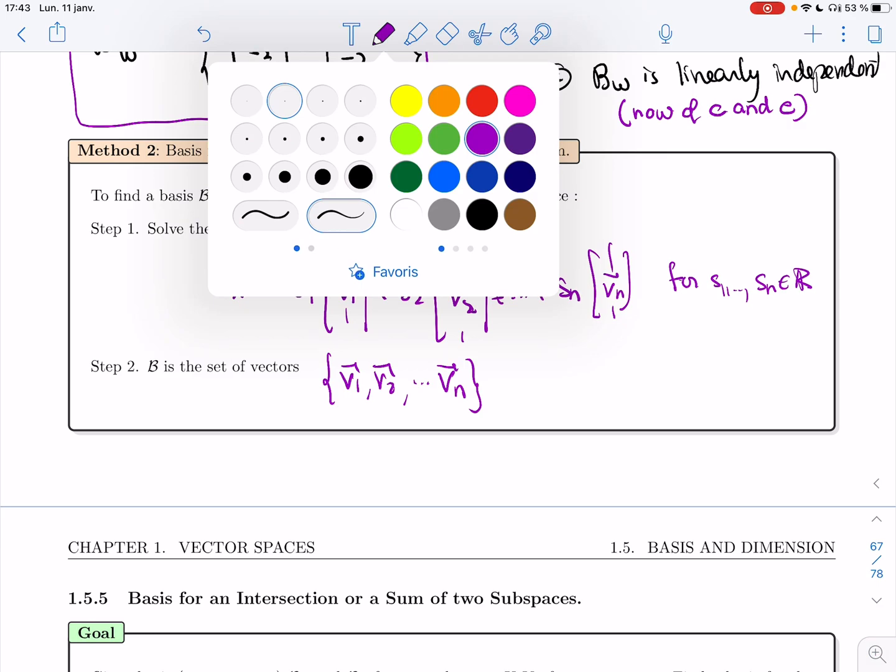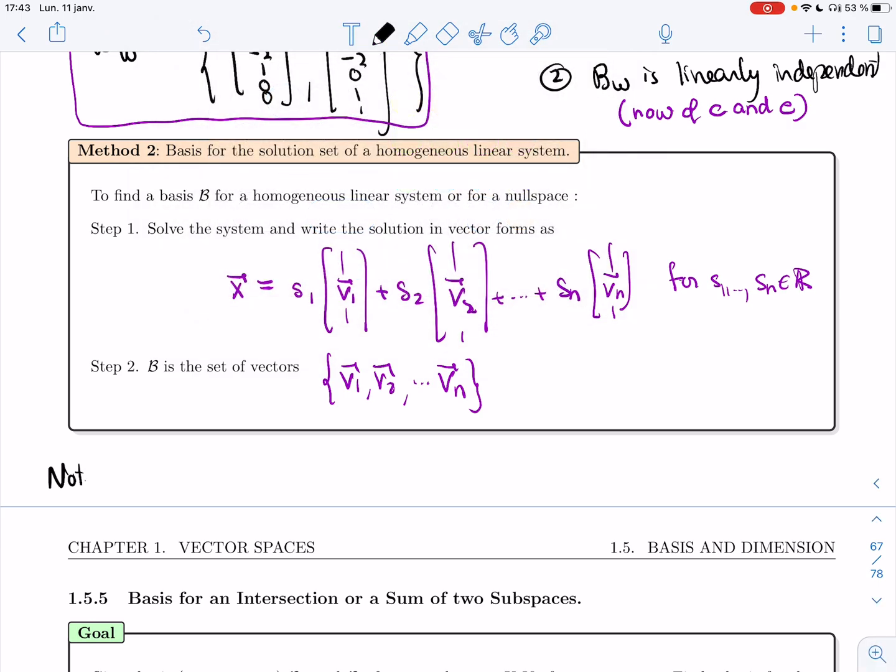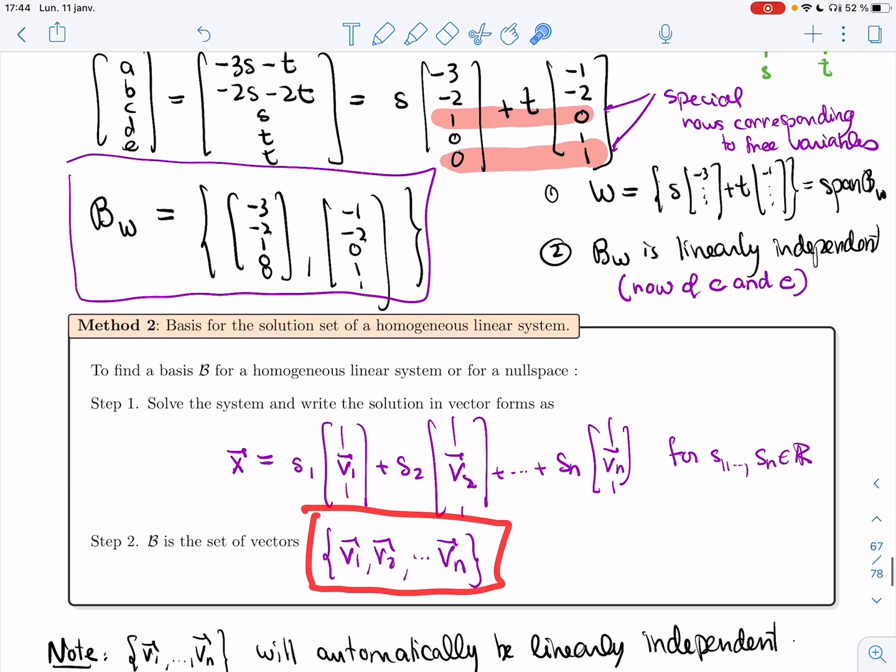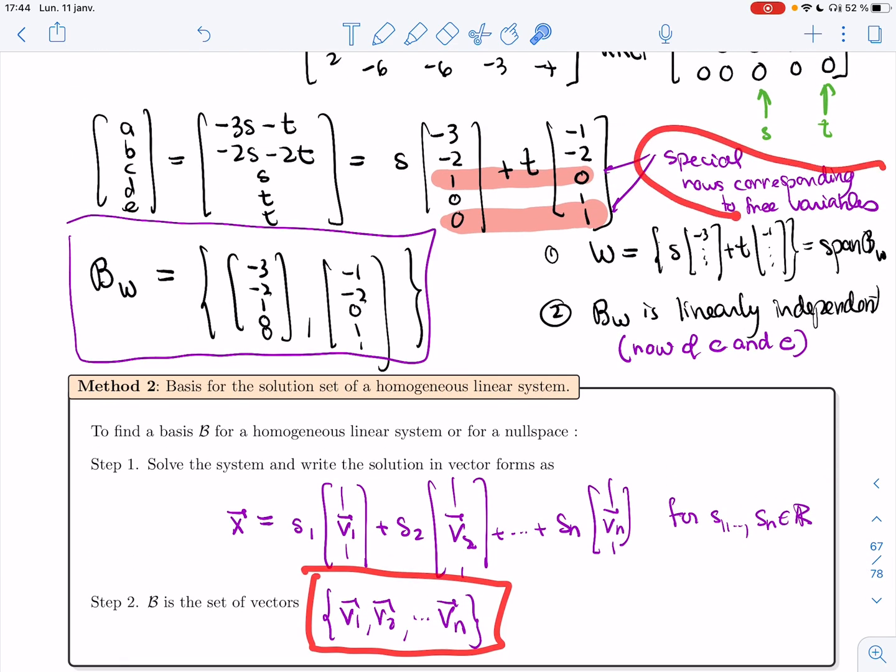All right, so let me just add a note here. In this case, the set of vectors that you get is automatically linearly independent exactly because these special rows exist.